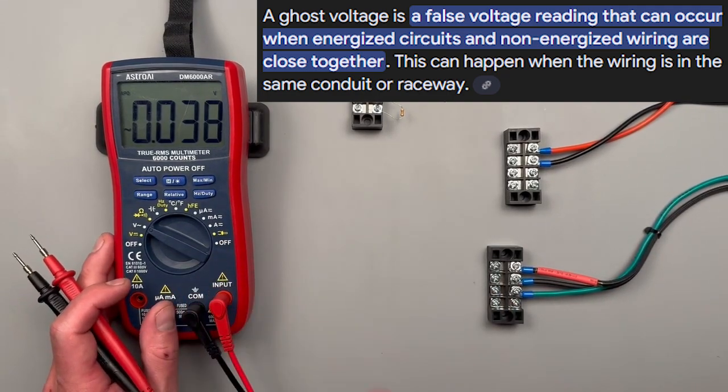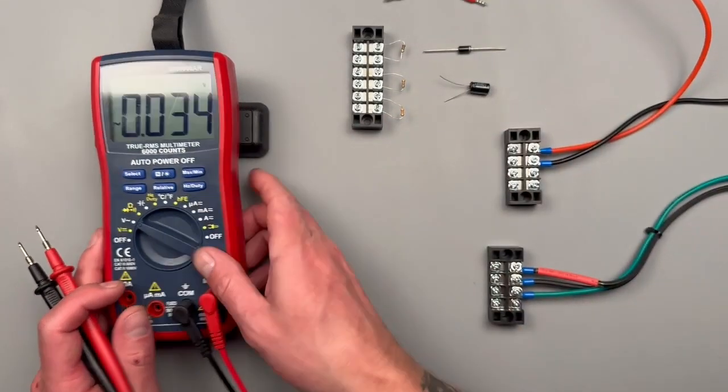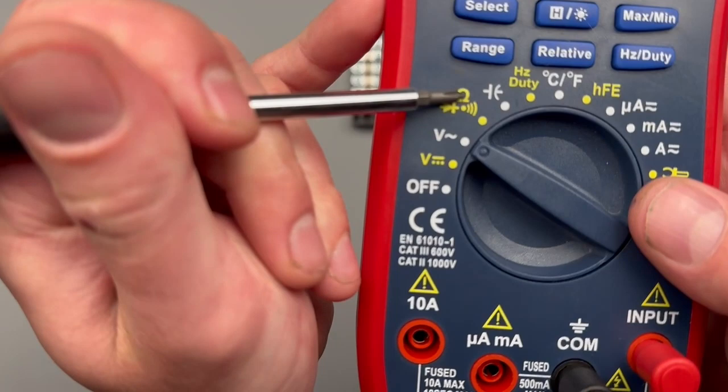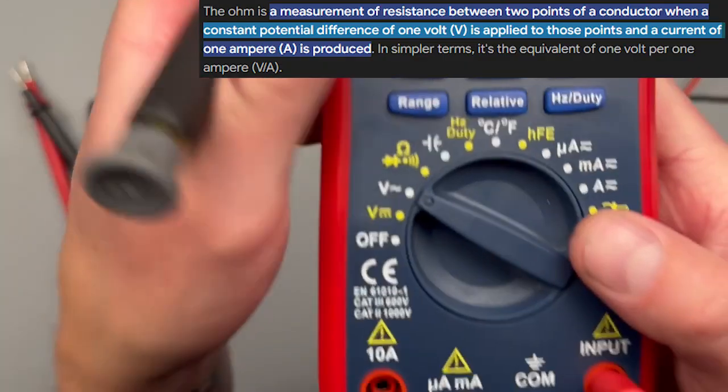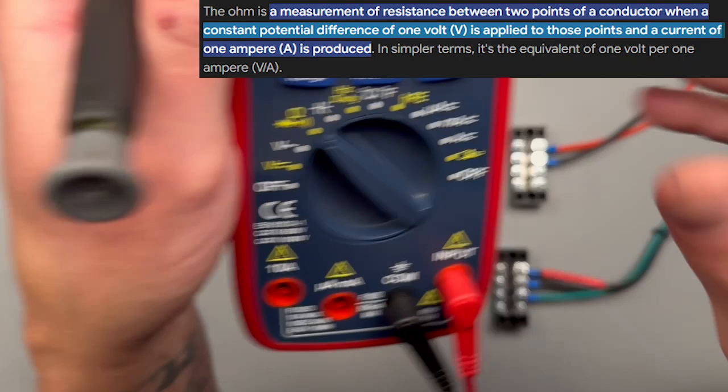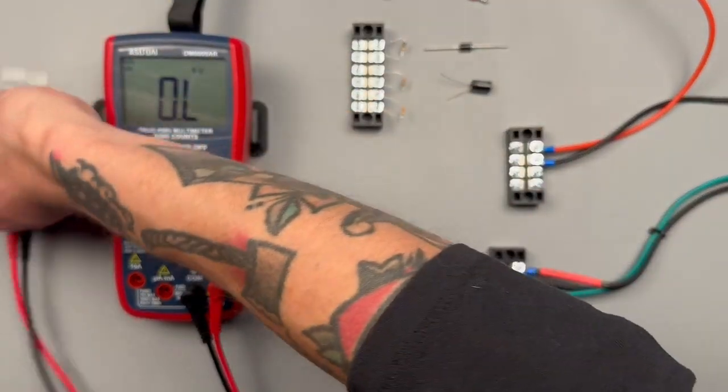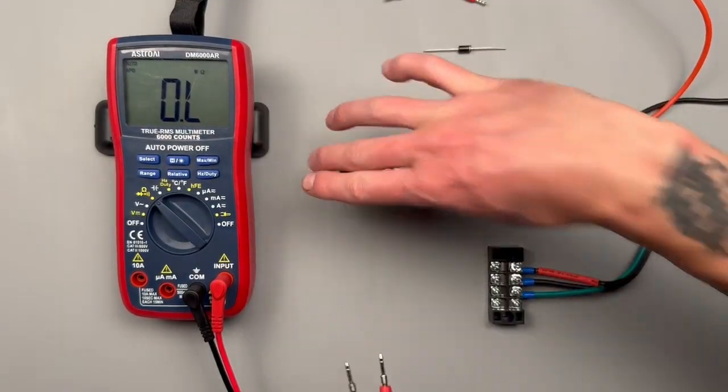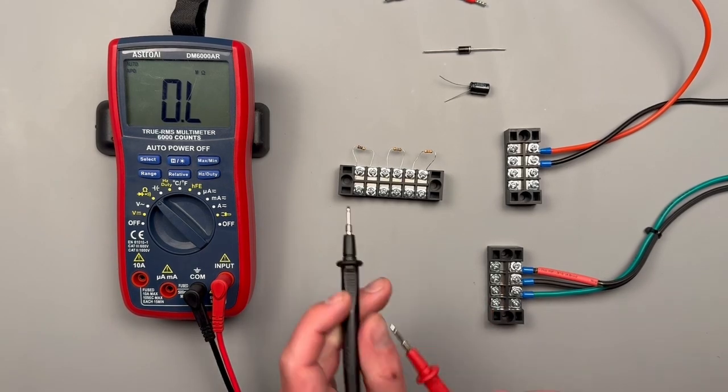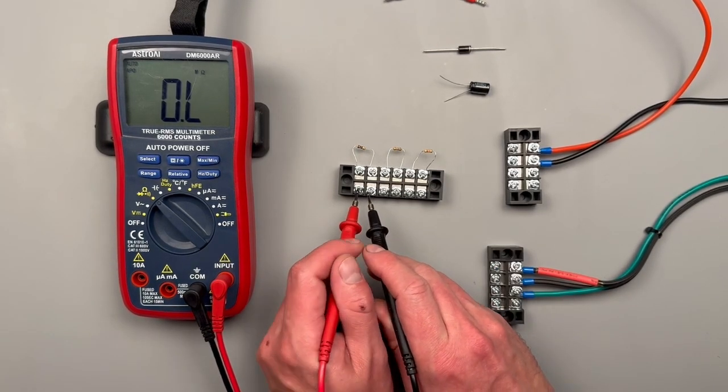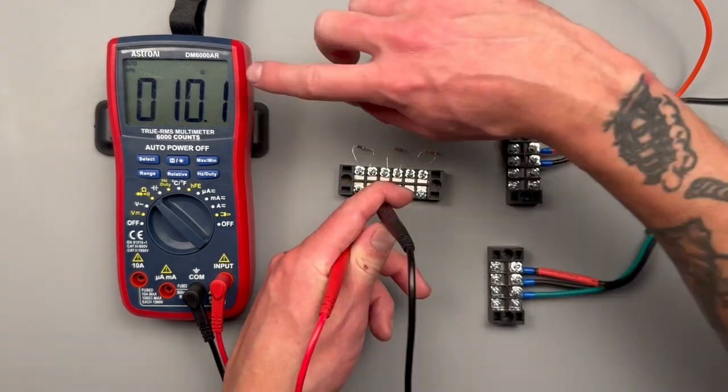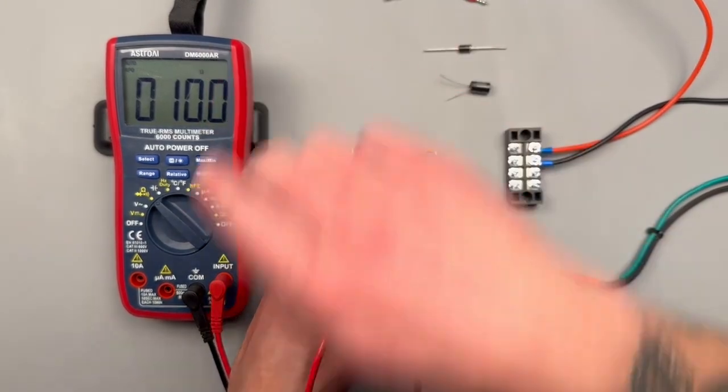Next up we're going to have ohms, continuity, and diode. When we go to this setting it's going to default to ohms or resistance. I've got a few different resistors here. It's also going to be auto ranging for resistance, but we can use that range switch to change the resolution of our measurements. Lead polarity is not going to matter for this type of measurement, and we can see it's reading 10 ohms.